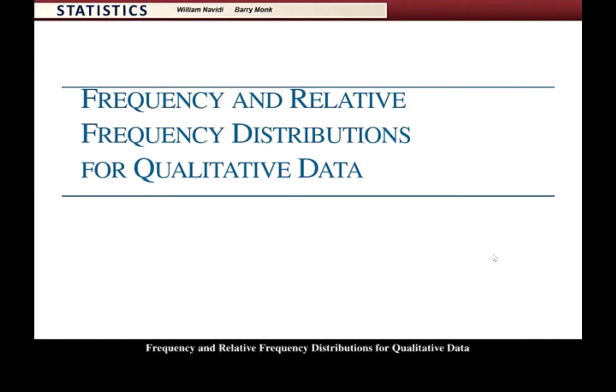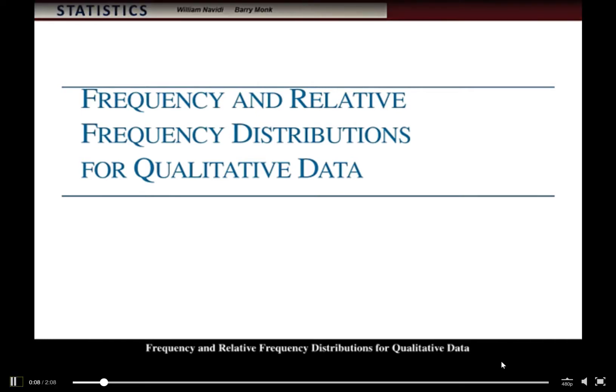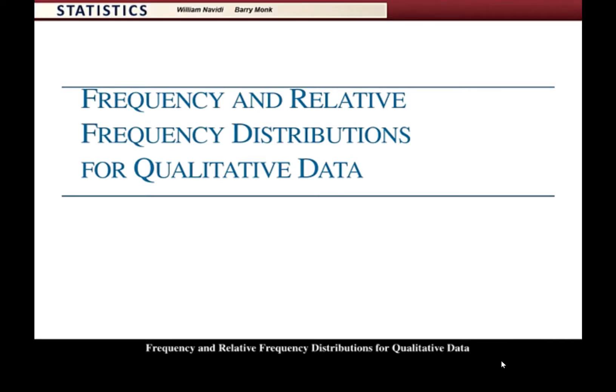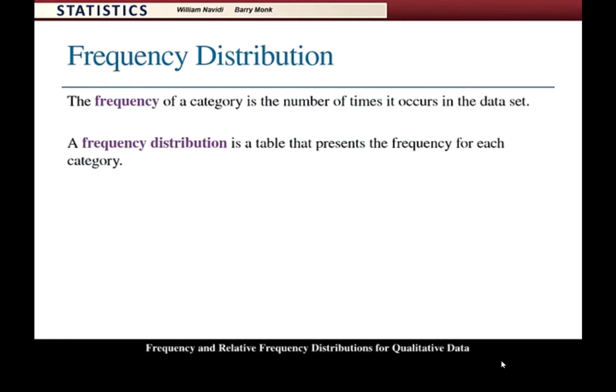Frequency and relative frequency distributions for qualitative data. The frequency of a category is the number of times it occurs in the dataset. A frequency distribution is a table that presents the frequency for each category.